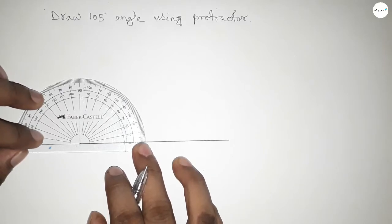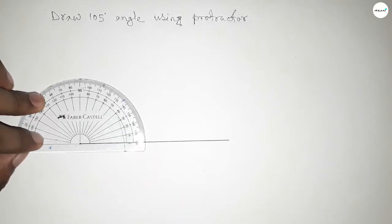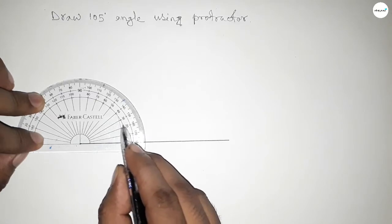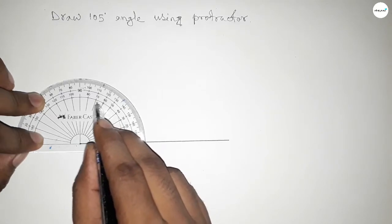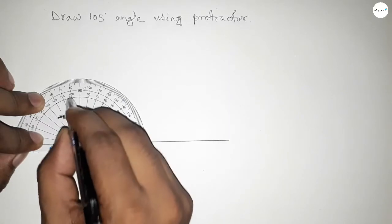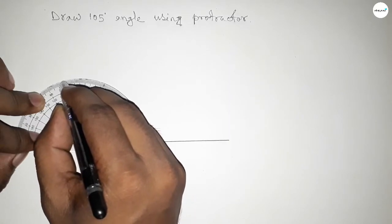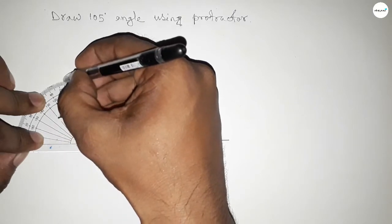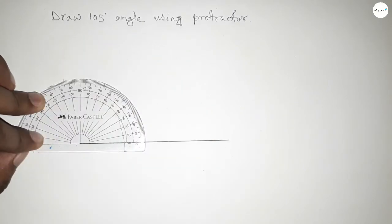Now counting the angle. So this is 0, 10, 20, 30, 40, 50, 60, 70, 80, 90, 100, and this is 110. So between 100 to 110 we can get 105 degrees. So this is 105 degree angle.